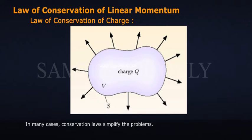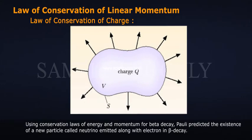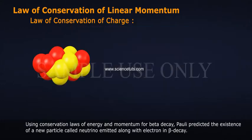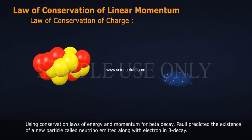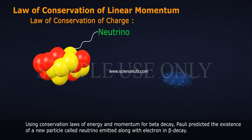In many cases, conservation laws simplify problems. Using conservation laws of energy and momentum for beta decay, Pauli predicted the existence of a new particle called the neutrino, emitted along with the electron in beta decay.